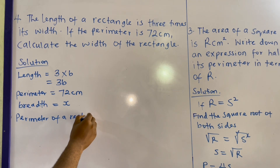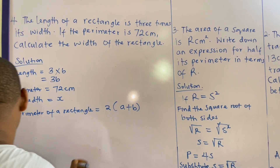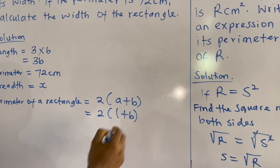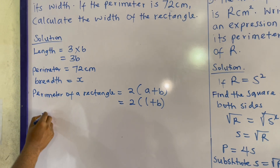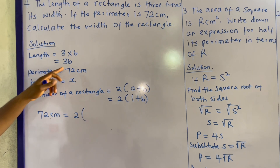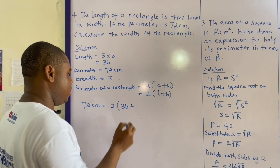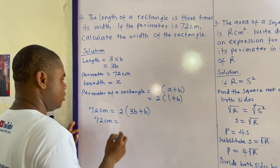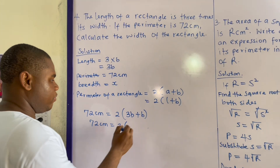The perimeter of a rectangle is 2 times (l plus b). The perimeter is given as 72 centimeters, so 72 centimeters equals 2 times (3b plus b). Since 3b plus b equals 4b, we have 72 equals 2 times 4b, which is 8b.